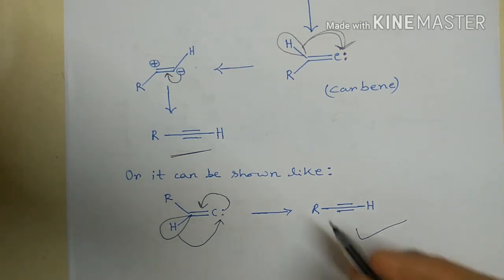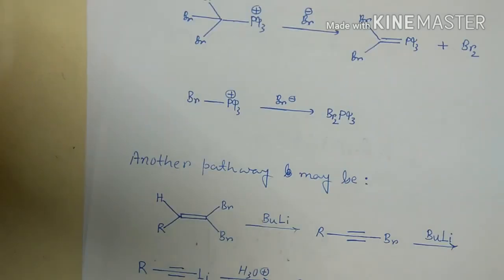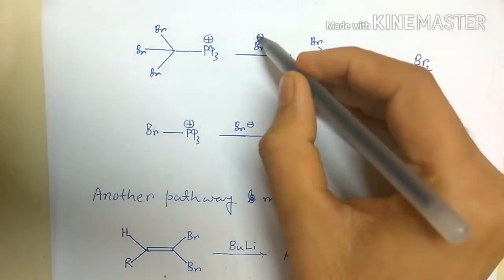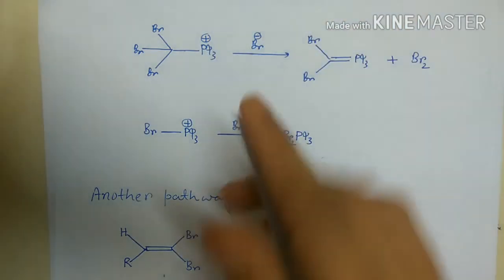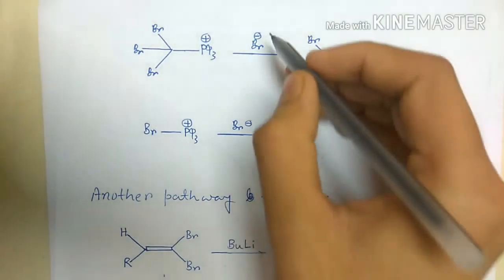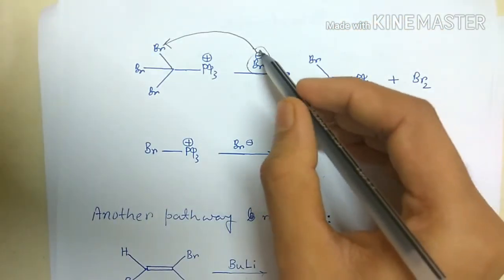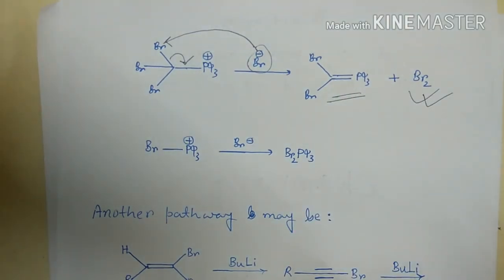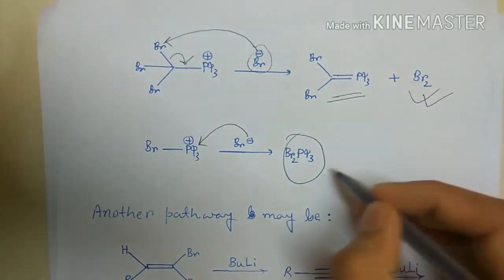The alkyne is the product we obtain from the Corey-Fuchs reaction. Additionally, the bromide released during the initial attack of phosphine on tetrabromomethane can itself attack the dibromo alkene intermediate, or attack another site to form unwanted bromine-containing byproducts — these are also proposed mechanistic pathways.